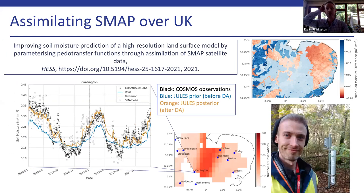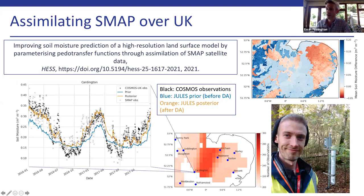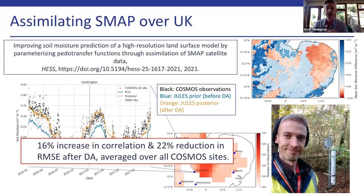We can't be sure we're doing a good job by just looking at the SMAP map, so we use these independent COSMOS probe observations for validation. Looking at one particular location — Cardington — taking the closest one-kilometer JULES grid cell, the blue line is the prior model estimate, the orange is the posterior after optimizing parameters, and the black plus signs are COSMOS probe observations that were completely independent and not used in the DA. We're fitting them much more closely, and across all COSMOS probes we find an average 16% increase in correlation and a 22% reduction in RMSE after DA.